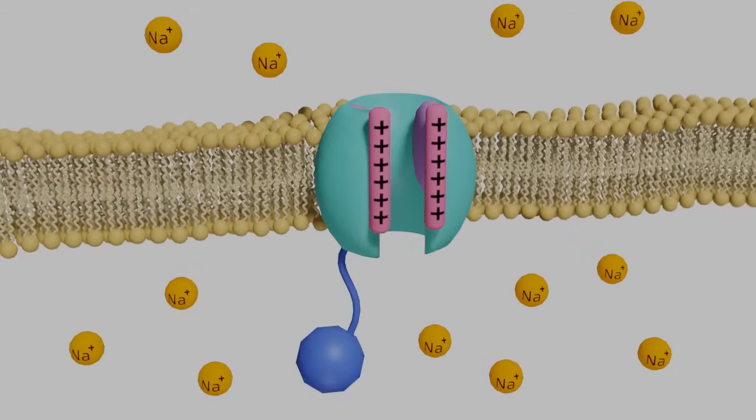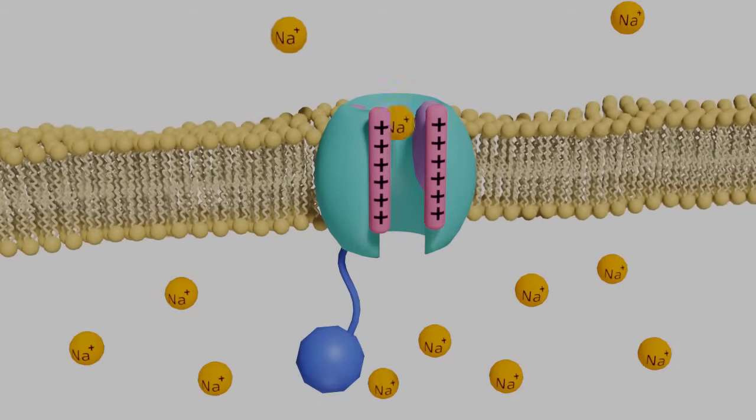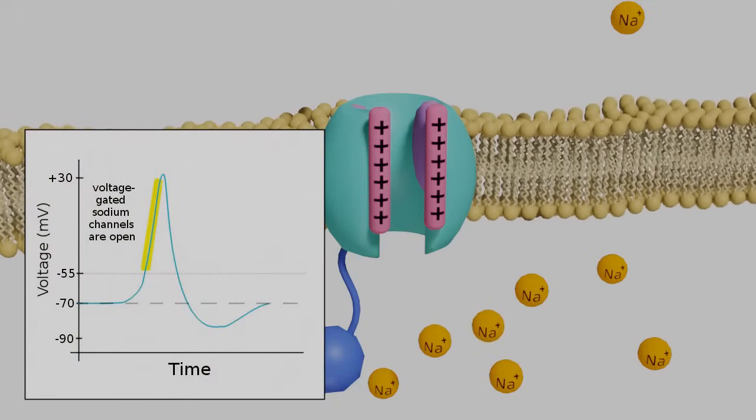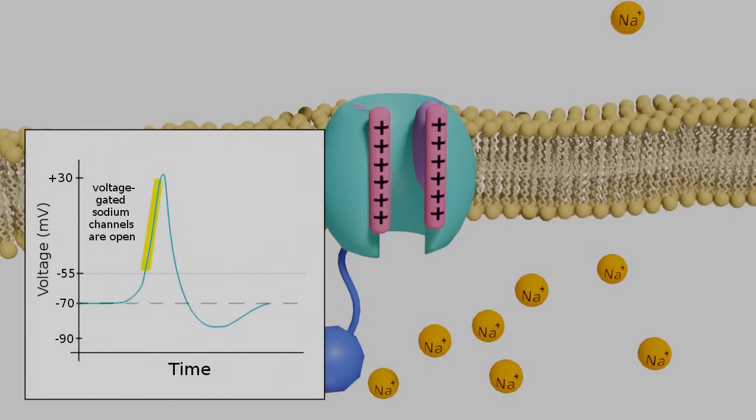This causes the gates to open, and sodium floods into the cell. This is represented by the long, steep part of the graph, where the potential is rising very quickly.